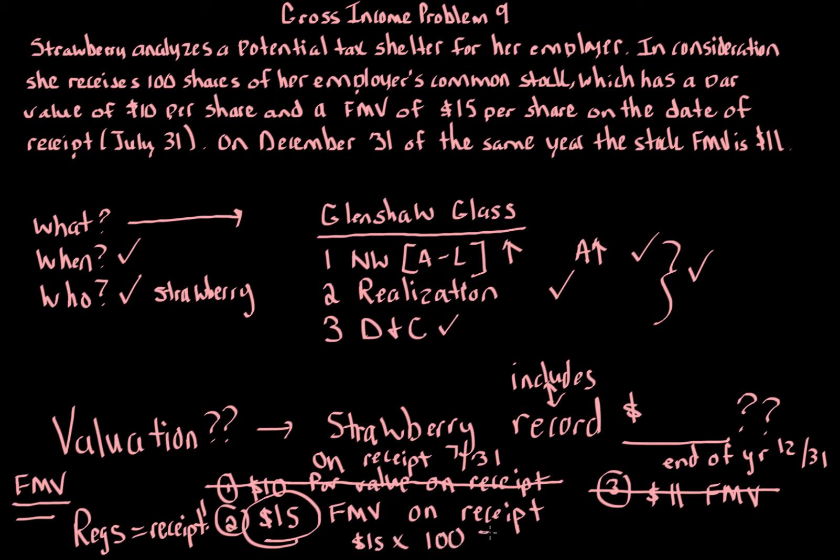We take the $15 fair market value on receipt times 100 shares, and that gives us $1,500 total. So strawberry is going to include or record $1,500 of gross income for the year with respect to this transaction. That's what goes on the tax return.